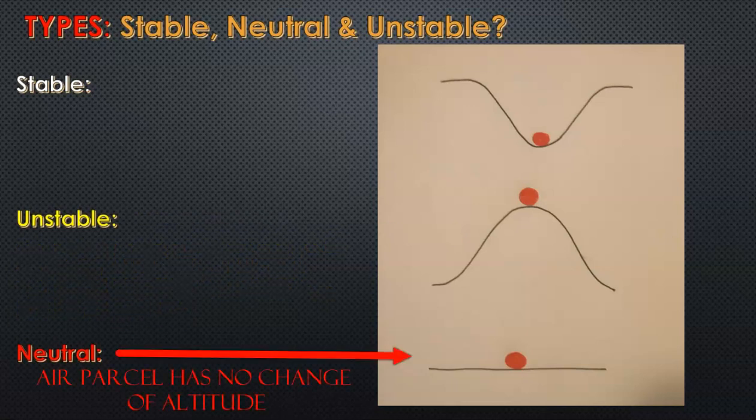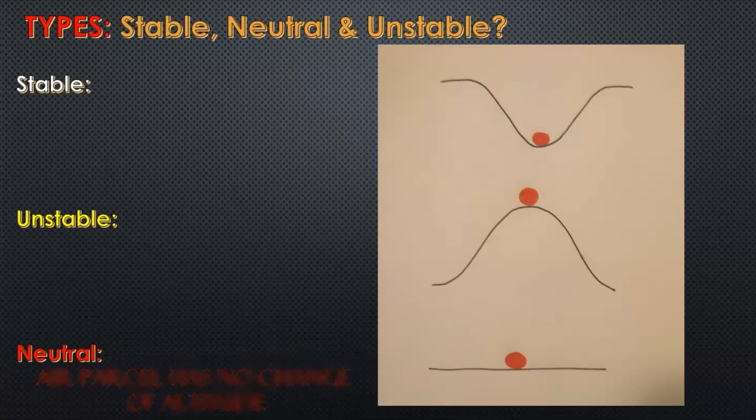Then we have neutral stability. Neutral is rare in the atmosphere. It is a point between stable and unstable, where there is a conditional situation in which the air parcel is neither sinking nor rising for a short period of time.